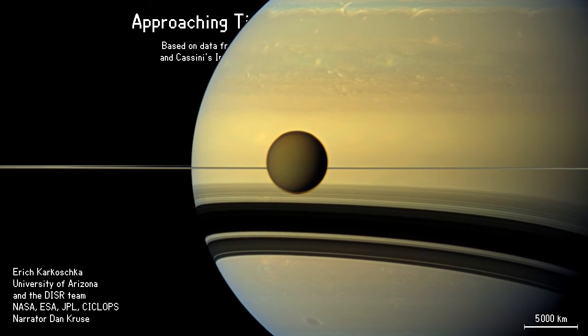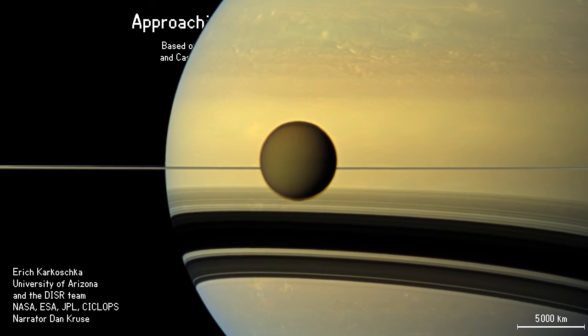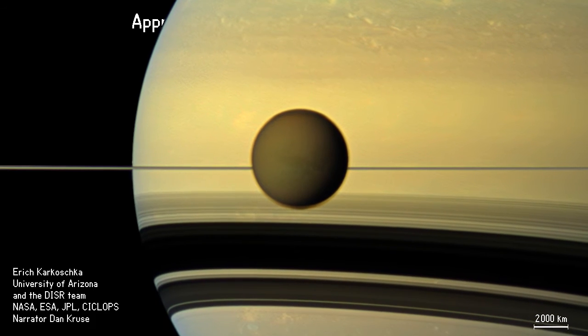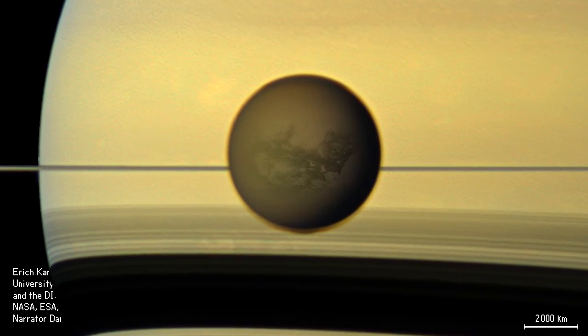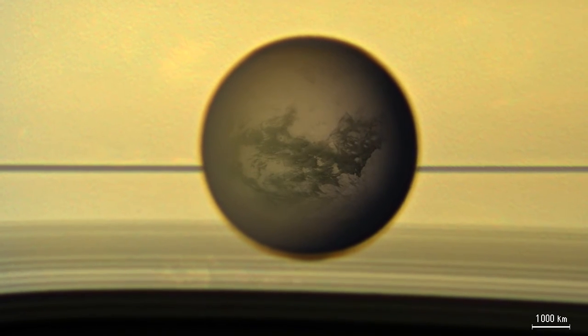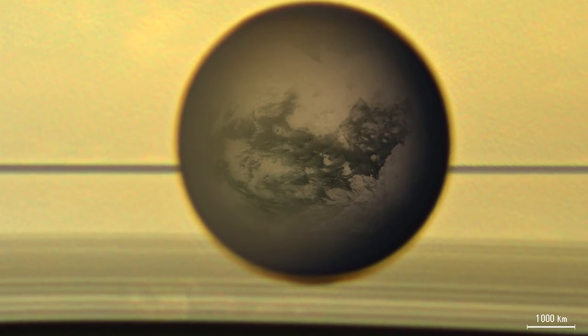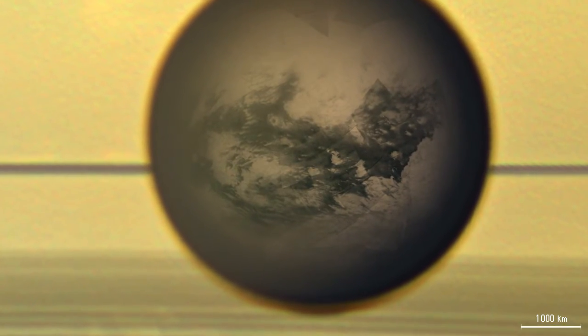Saturn's atmosphere shows a banded structure and a number of storms. We view the edge of Saturn's gigantic ring system. The rings cast major shadows onto Saturn's southern hemisphere. Titan is surrounded by a partially transparent brown haze.